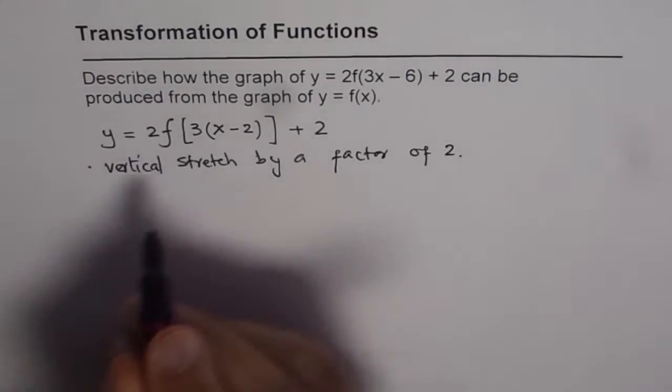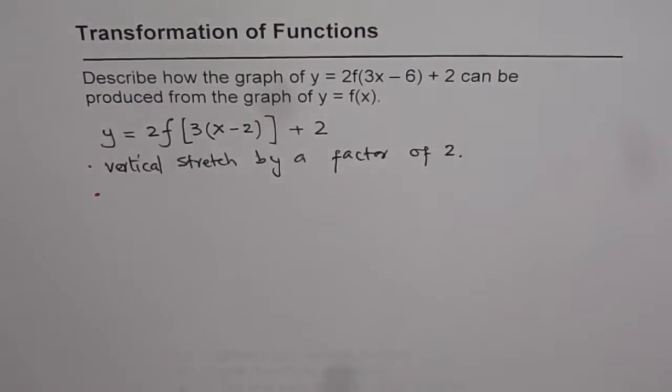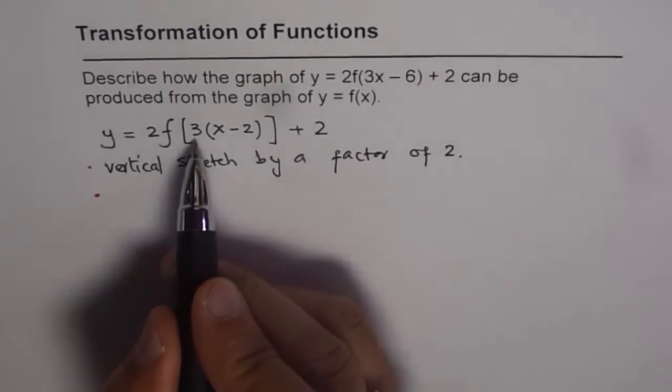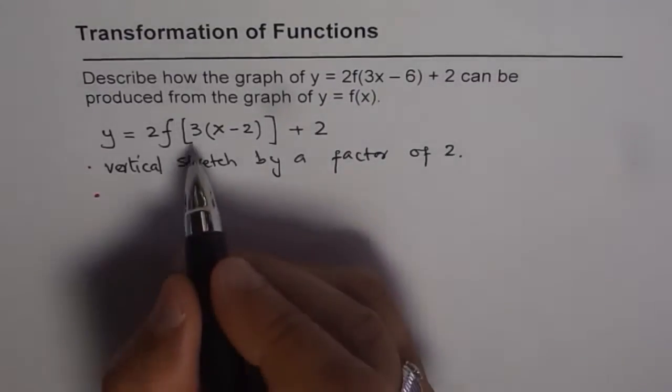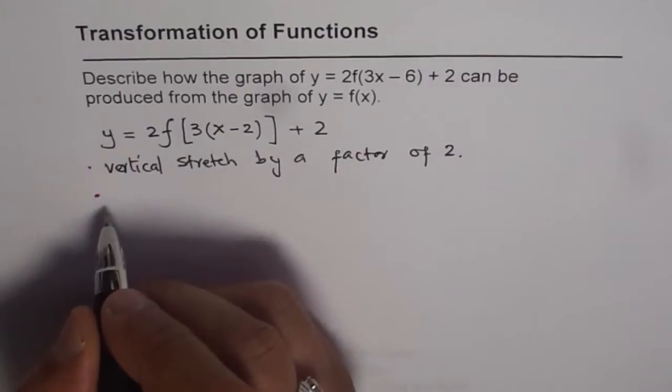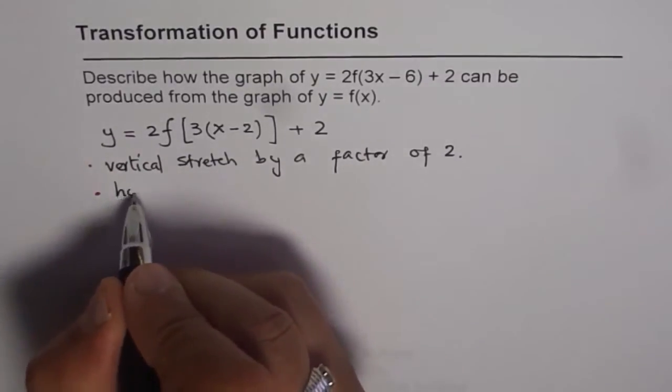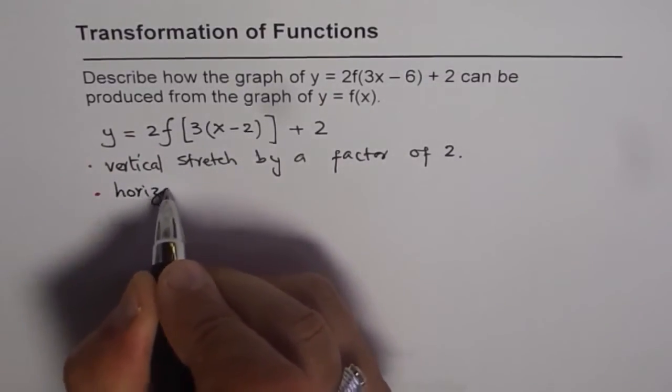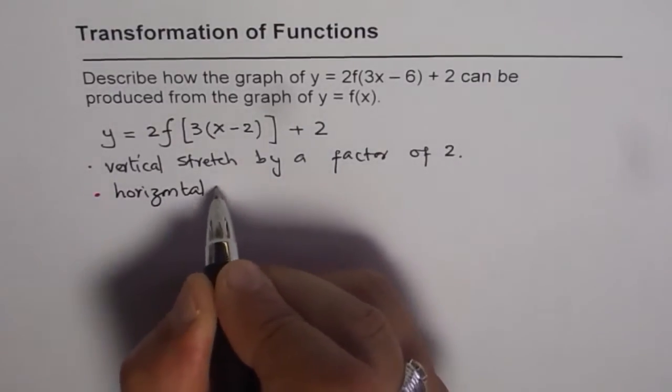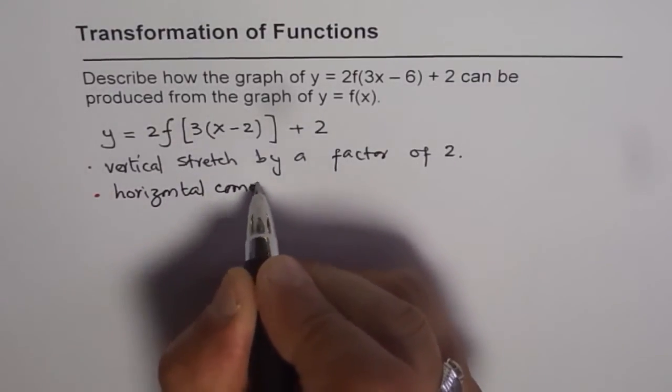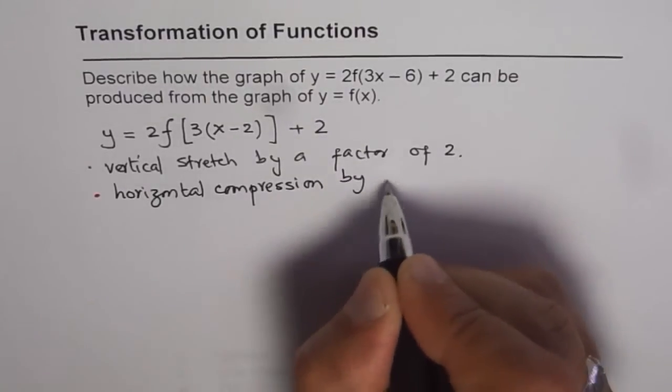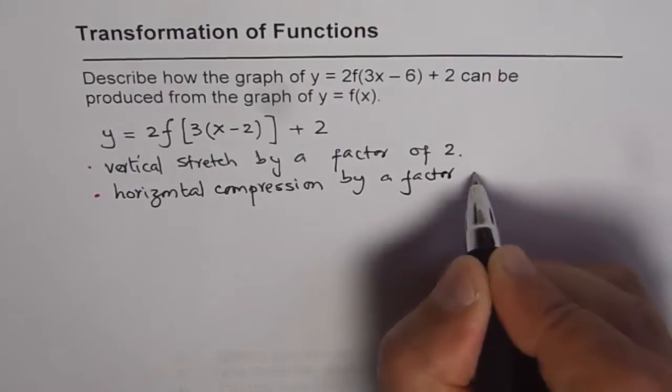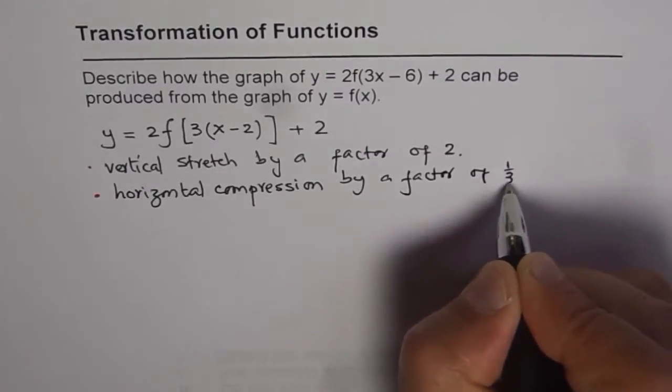Let's move from left to right. If you move from left to right, order is maintained. Now this factor inside, inside terms are all pertaining to horizontal things. So 3 here gives you horizontal compression by a factor of how much? 1 over 3.